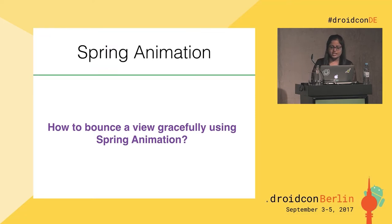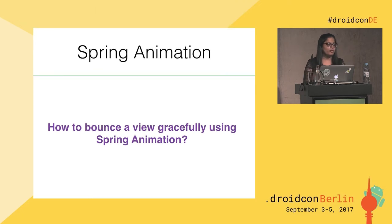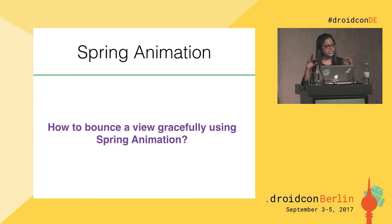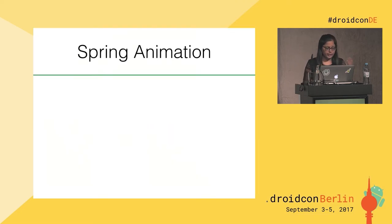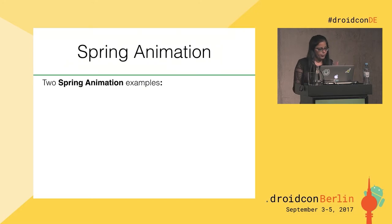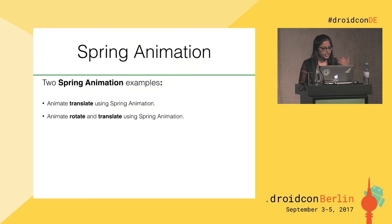Let's start with spring animation. In real life, when an object is attached to a spring and you pull that object, the spring stretches. When you release the object, it returns to its initial position with a bouncy spring effect. Spring animation lets us simulate that in our app. I'm going to take you through two examples: first, how to do translate using spring animation, and second, how to do rotate and translate using spring animation.